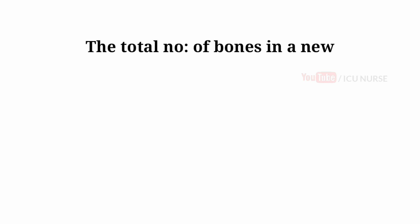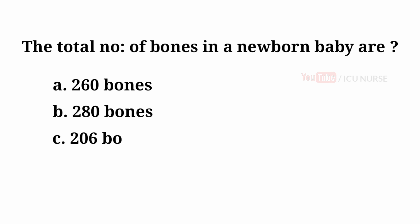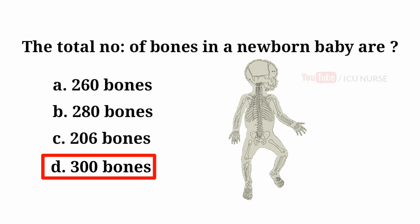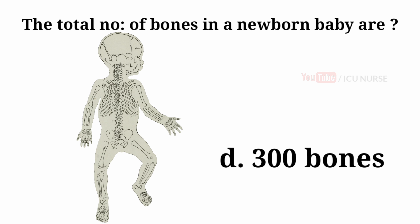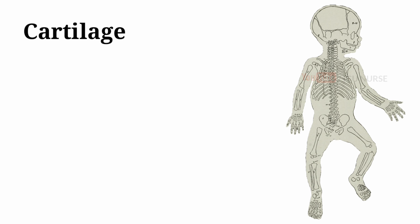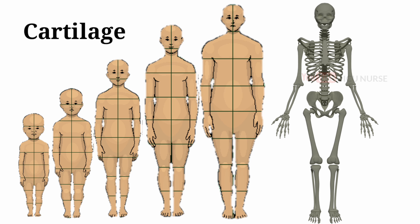The total number of bones in a newborn baby are: A. 260 bones, B. 280 bones, C. 206 bones, D. 300 bones. And the answer is D. 300 bones. The total number of bones in a newborn baby are about 300. A baby's skeleton is mostly made up of cartilage. As the baby grows up, most of the cartilage turns into bone in a process called ossification. By adulthood, these 300 bones decrease to about 206 bones.